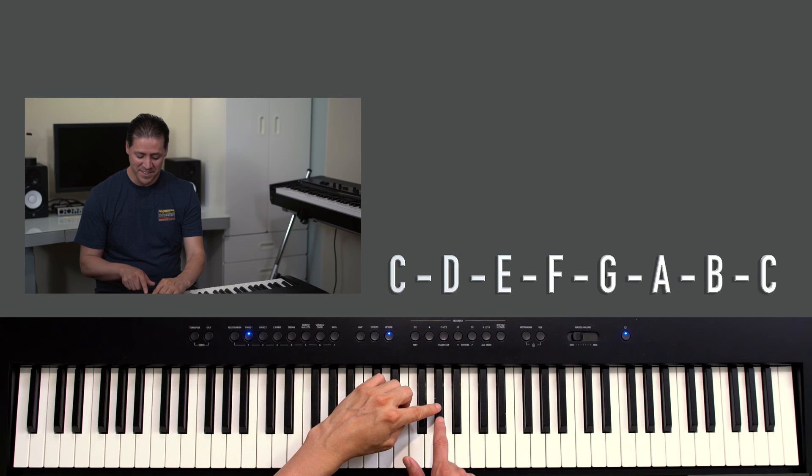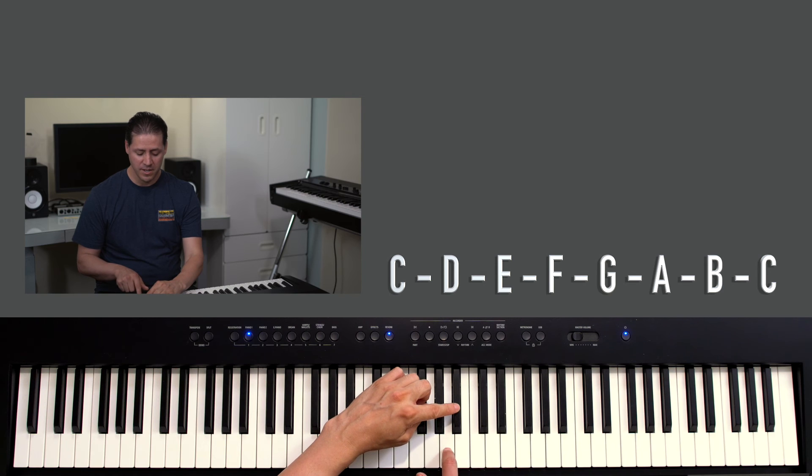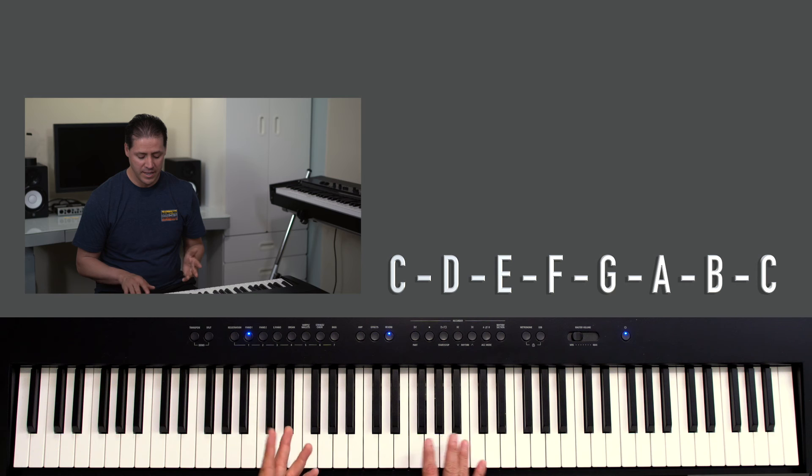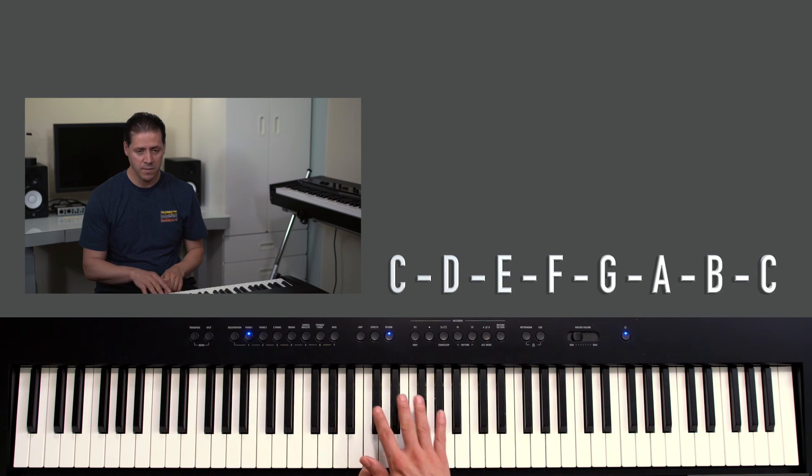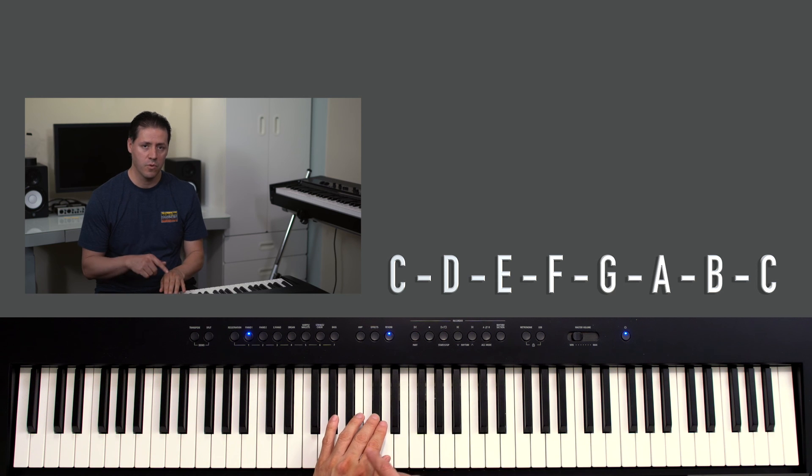The third black key is called A sharp or B flat. And that's it. So basically you really only have to learn seven notes, and the black keys are going to be the same type of notes but either a sharp or a flat.